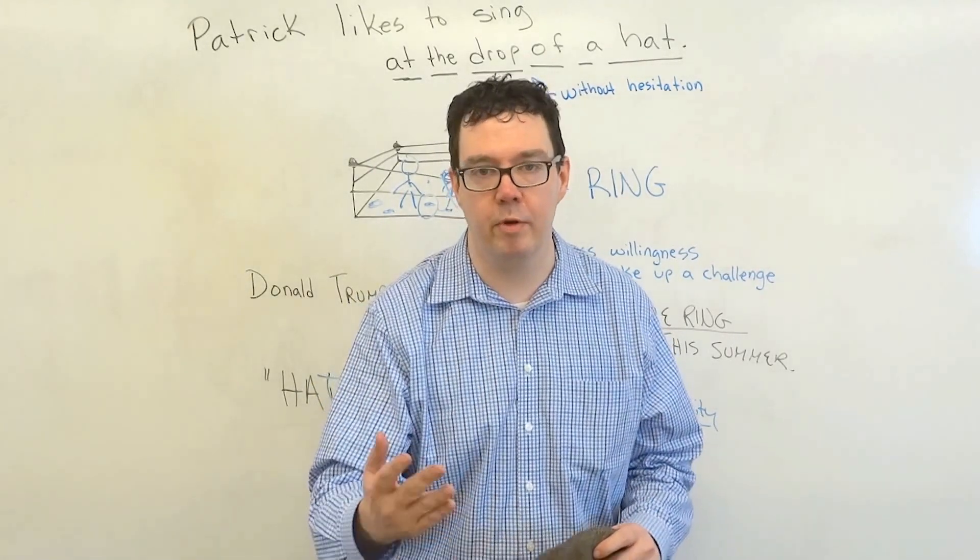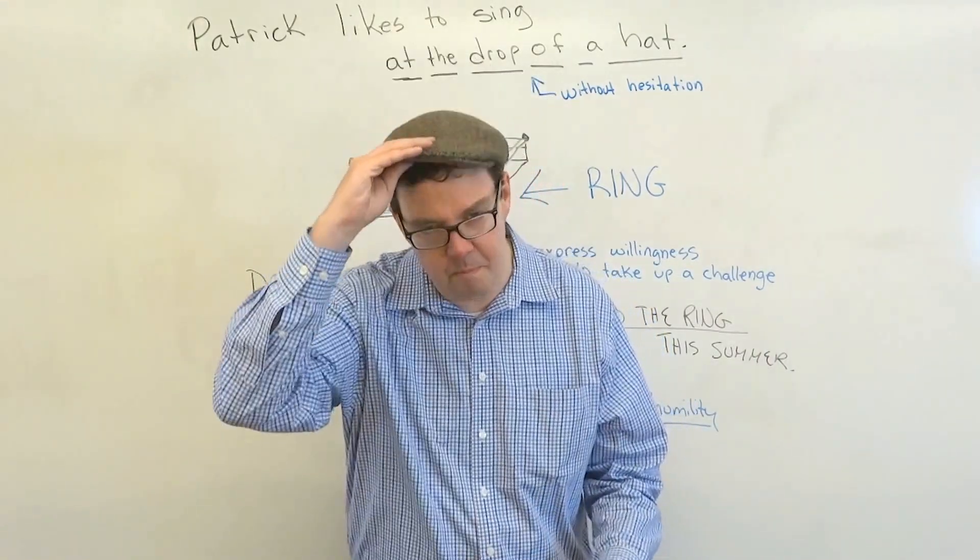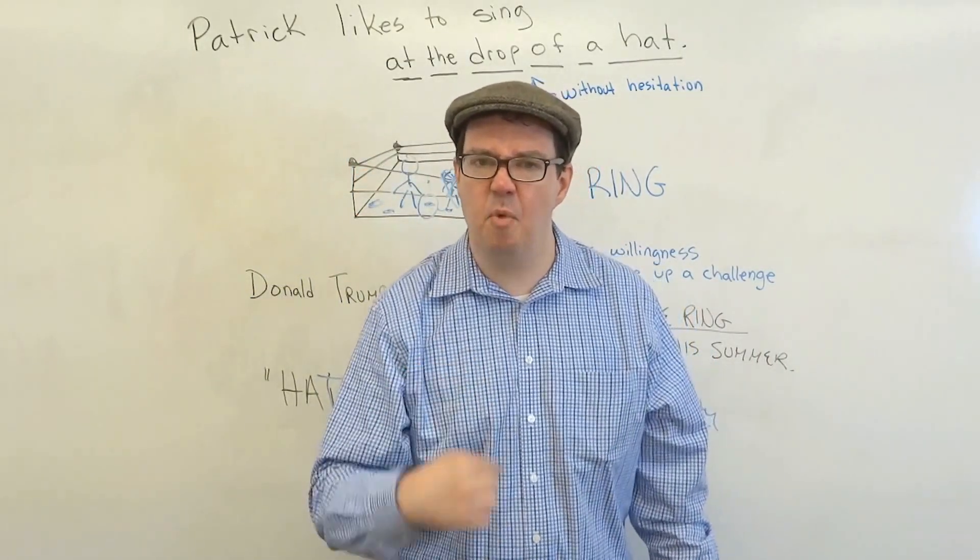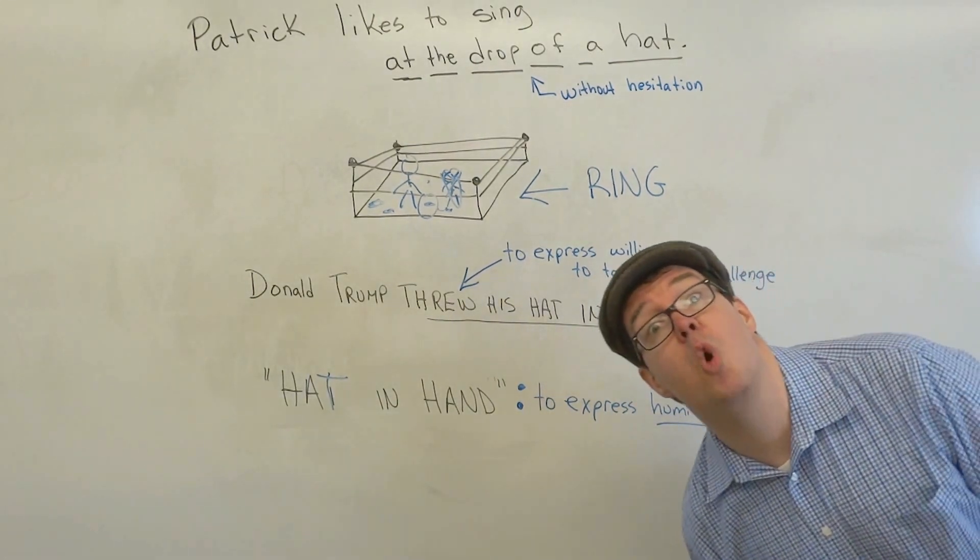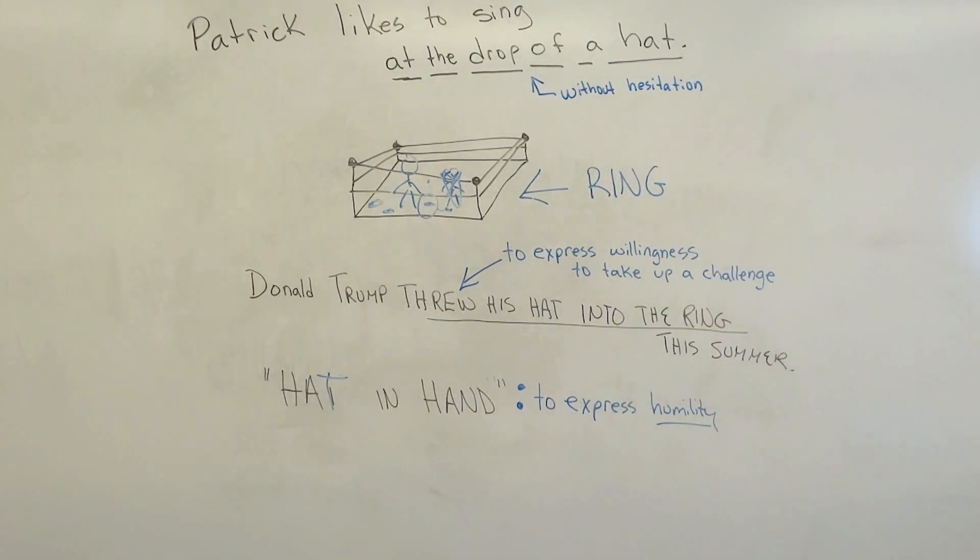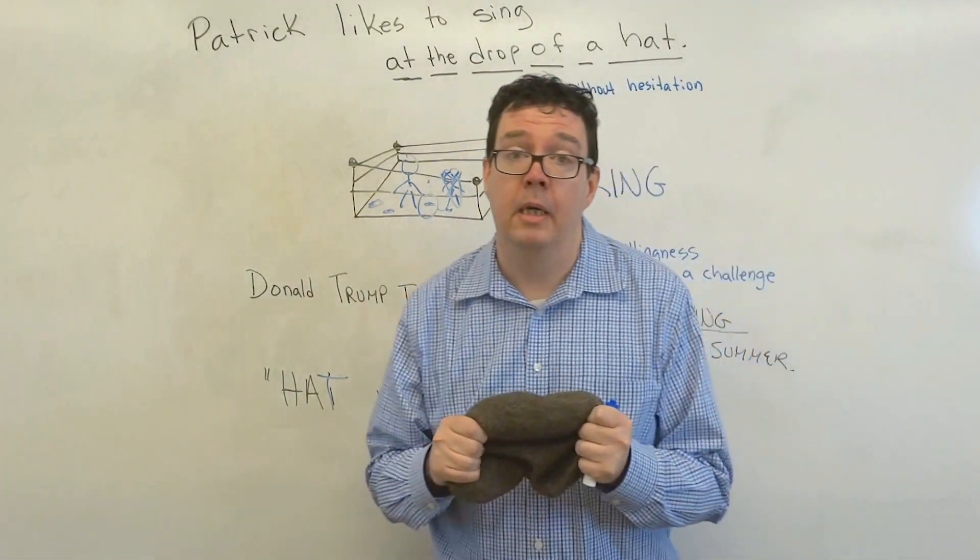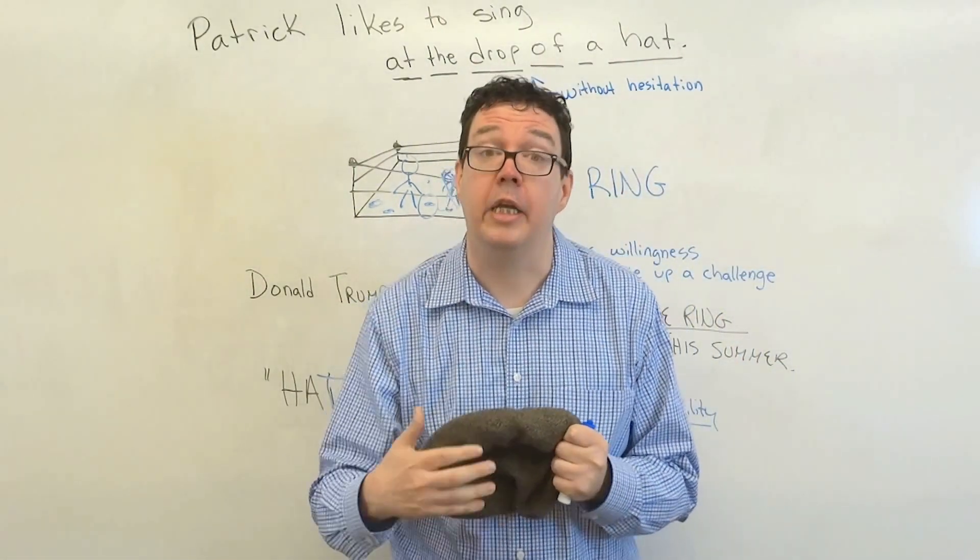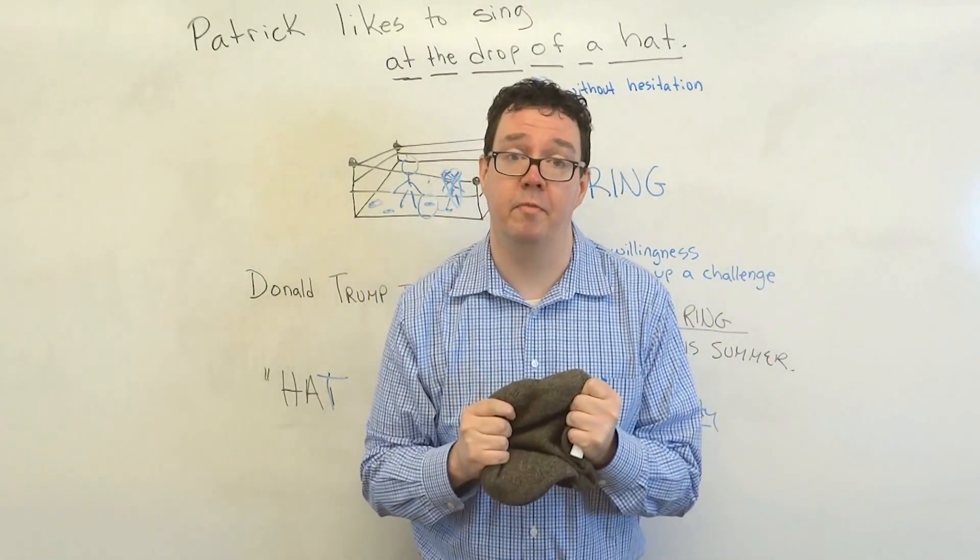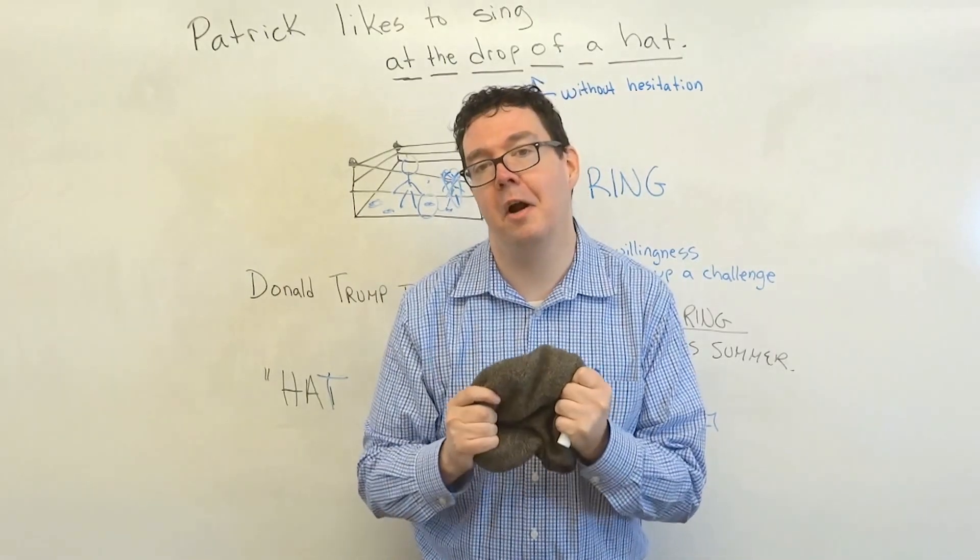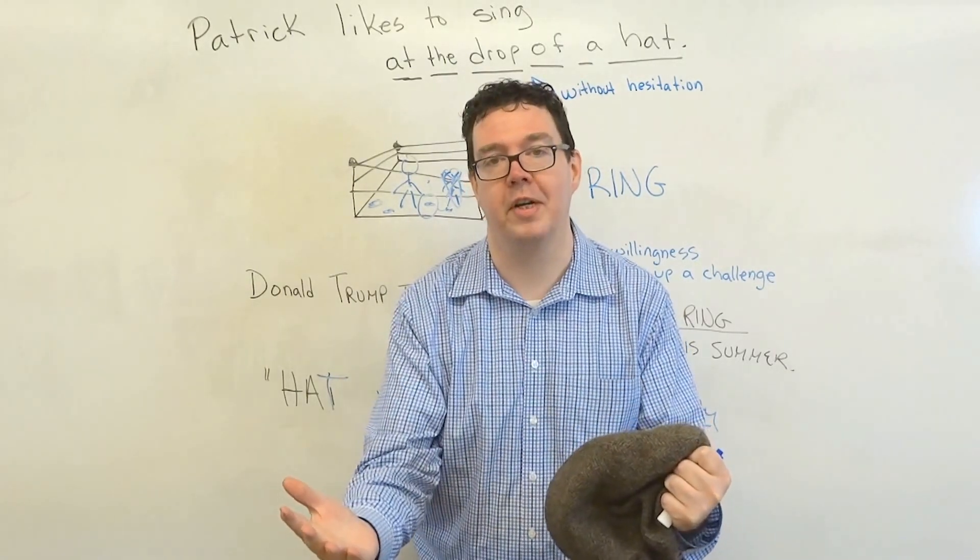Say that you're having a fight with your spouse or your boyfriend or girlfriend. And you say, that's it, I'm right, you're wrong, I'm leaving. And so you leave. And then you find out you were wrong. You were wrong. So now you have to come back and apologize. I'm so sorry. You were right. I was wrong. Could you ever forgive me? When our hat is in our hand, we are asking for forgiveness.